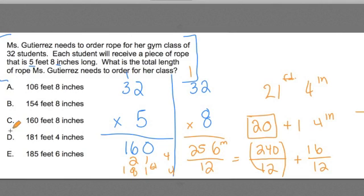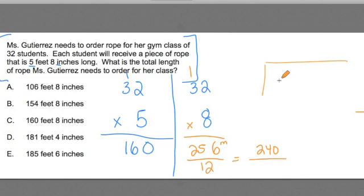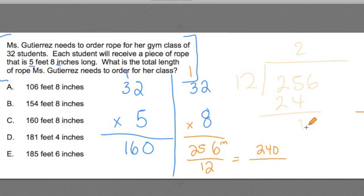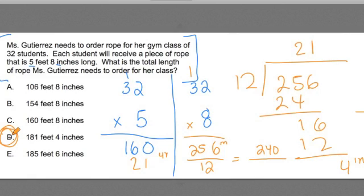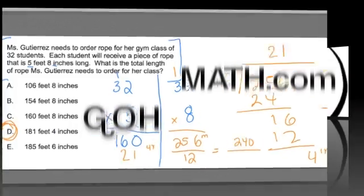You could have done this another way too — 256 divided by 12 — and gotten the same type of work. You would have gotten 21 a little faster and four remaining, and you could say that's four inches remaining. Try this one, practice it if you didn't get it the first time. I hope you found this helpful, team. This is Chris Abraham from GoMath. Have a great day, take care.